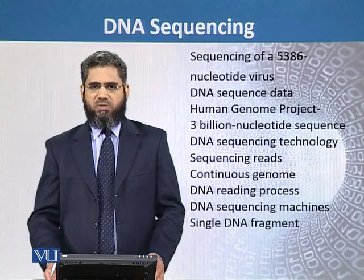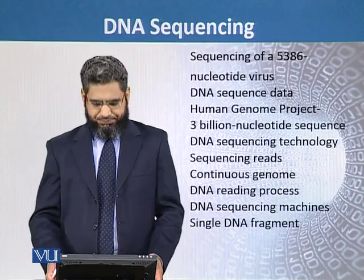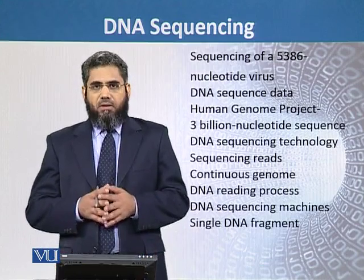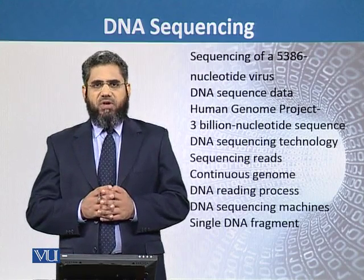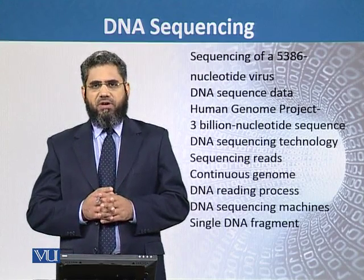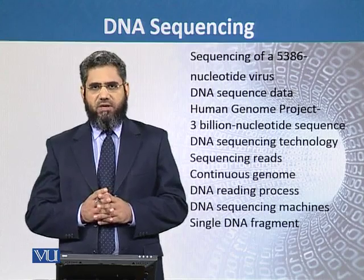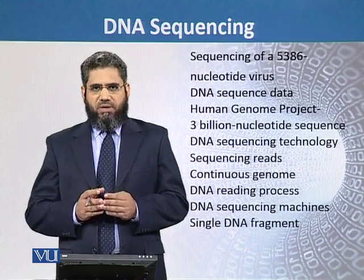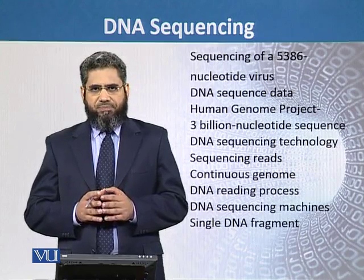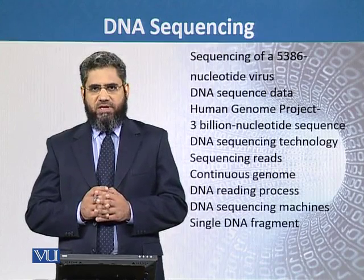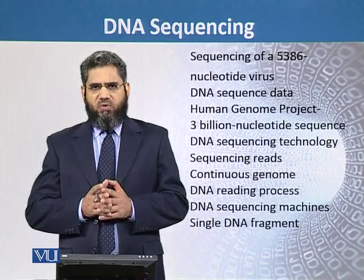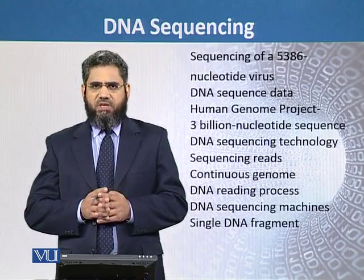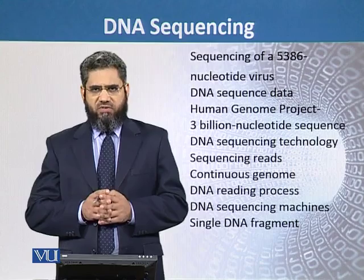The early methods could not go beyond 500 to 700 nucleotides. The sequencing data obtained was automated, and automated machines read the data using a microscope-like instrument. However, the sequencing data generated could still only cover 500 to 700 nucleotides.